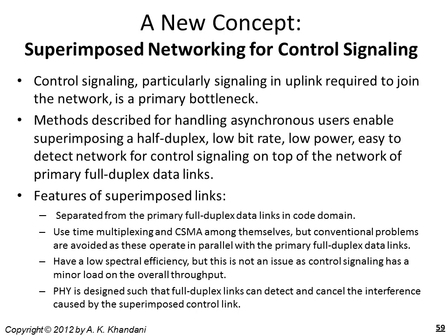The methods described for handling asynchronous users enable us to superimpose a network of half-duplex, low-bitrate, and low-power pipes of data for control signaling on top of the primary full-duplex data links. These superimposed links are separated from the primary full-duplex data links in the code domain. Among themselves, they are time-multiplexed and use carrier sense multiple access. Conventional problems of CSMA are avoided as these links operate in parallel with the primary full-duplex data links without causing too much disturbance. Due to low power signaling, spectral efficiency will be low, but this is not an issue as control signaling has minor load on overall network throughput.